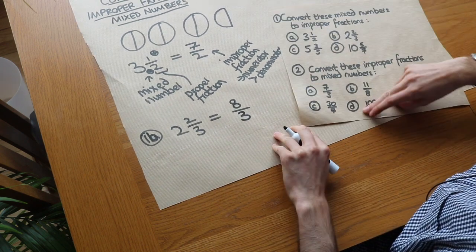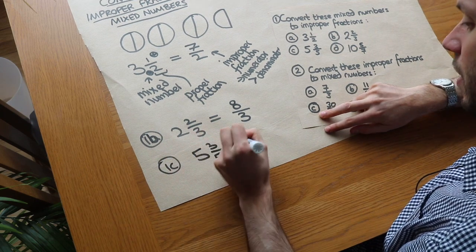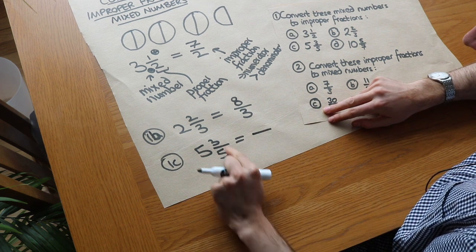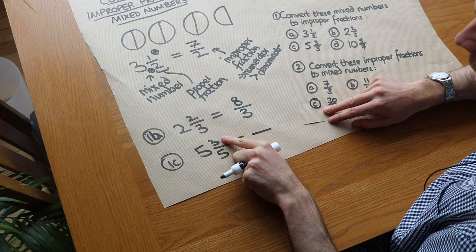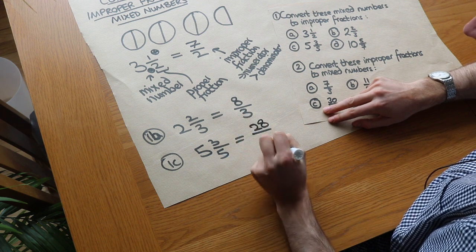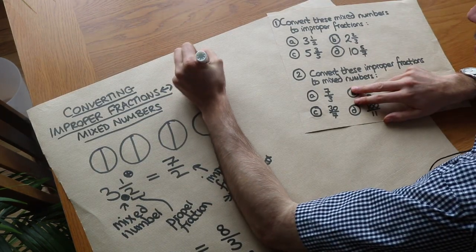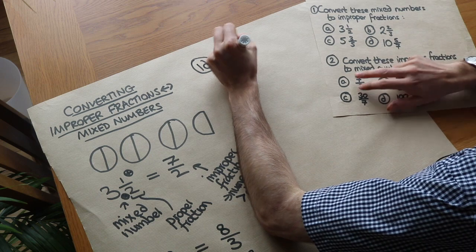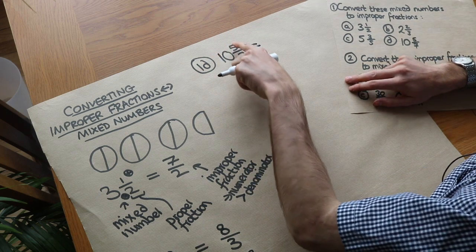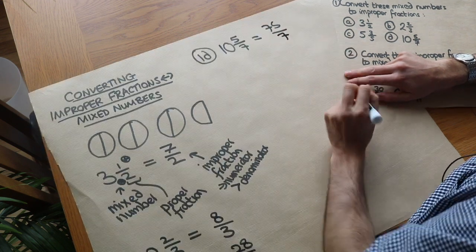What about the next one? We've got five and three-fifths. So for the numerator we do five times five is 25 plus the numerator, the three, is 28. So we have 28 and the denominator again is the same. What about 1d? We've got 10 and five-sevenths. Again we do the 10 times the seven which is 70 plus the five is 75, and we have the same denominator which is seven.